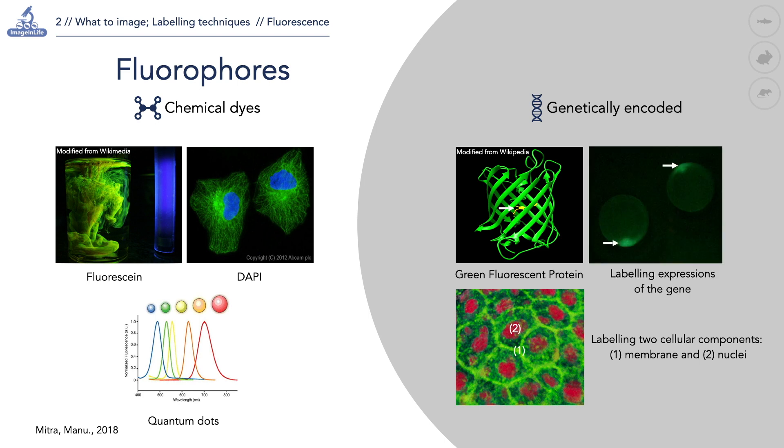Fluorescent proteins are also used as reporters of the expression of specific genes. Genetic manipulation leads to the expression of the fluorescent protein in specific domains. It can tell, for example, about how cells acquire their identity.